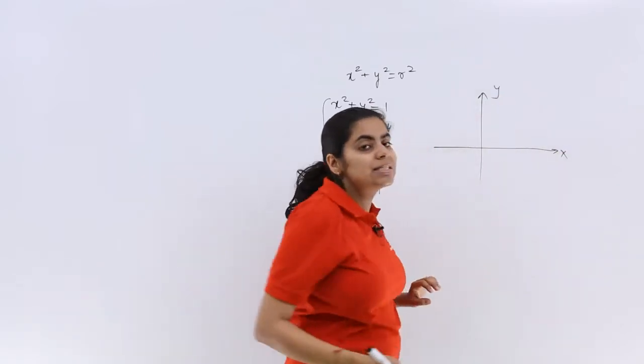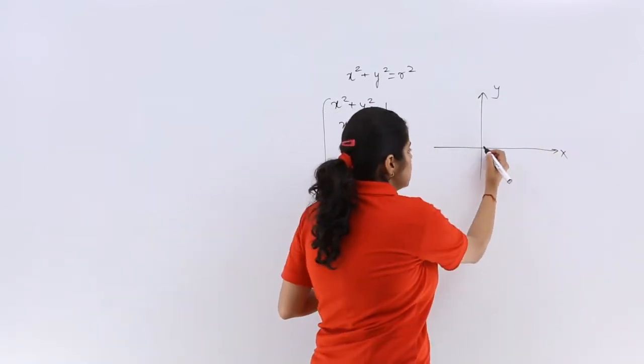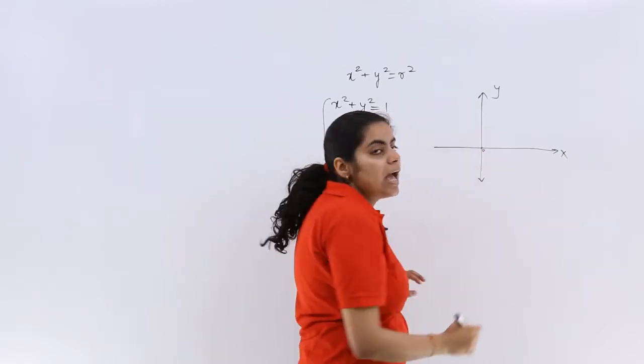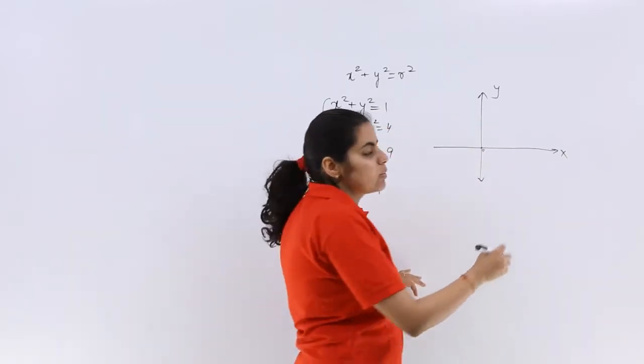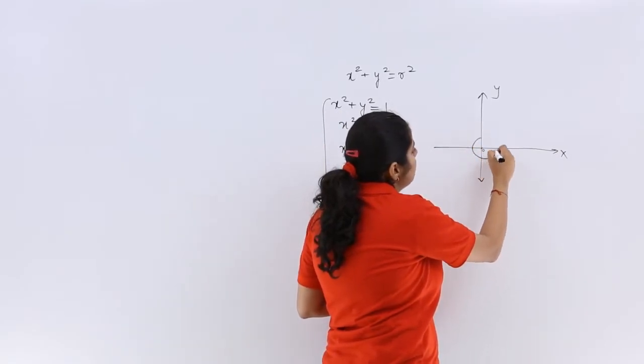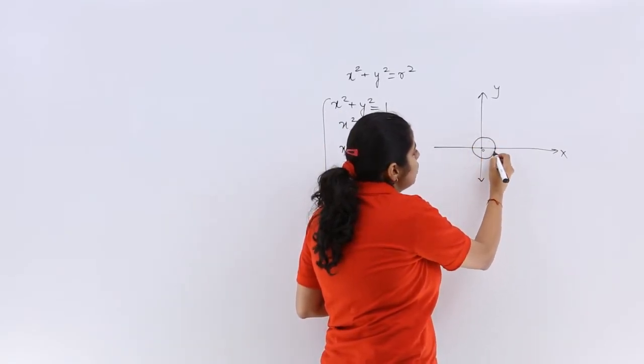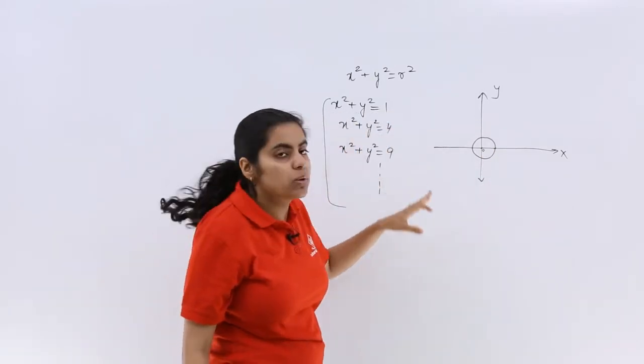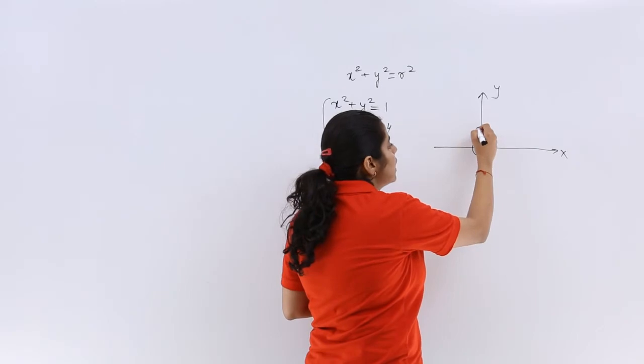It will give me concentric circles. Here is O, which is origin. For x² + y² = 1, it could be something like this where this is 1, and x² + y² = 4 could be something like this.